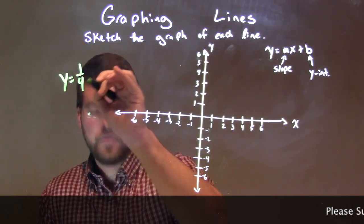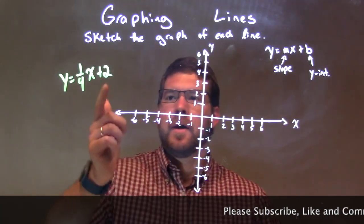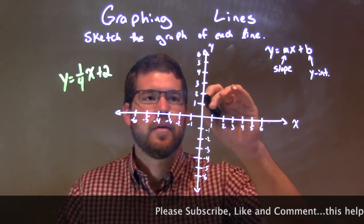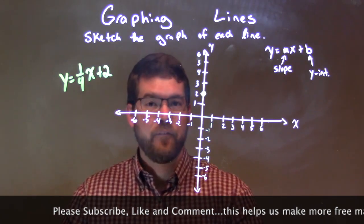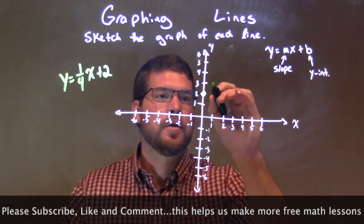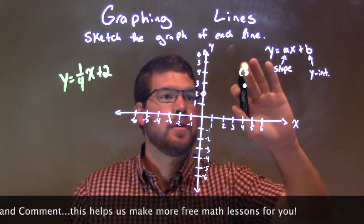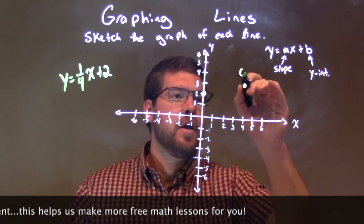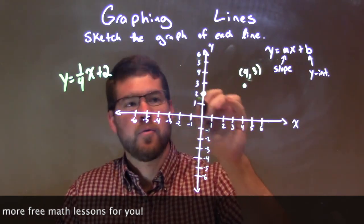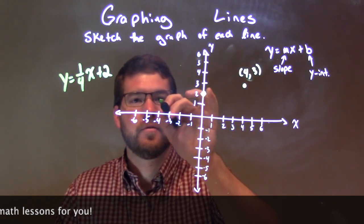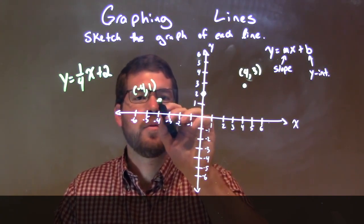y equals 1 fourth x plus 2. First thing I'm looking at is my 2 — that's my y-intercept. I'll go to the y-intercept. I have a 2 right here, put a dot there. Then I have my slope: 1 over 4. So that means I go up 1 unit over 4 units: 1, 2, 3, 4. Right here we have a point at 4 comma 3. We can also go down 1 to the left 4 units: down 1, 1, 2, 3, 4. We have a point right here at negative 4 comma 1.